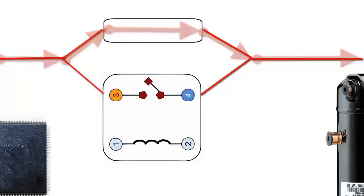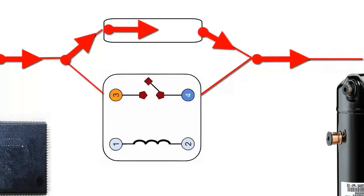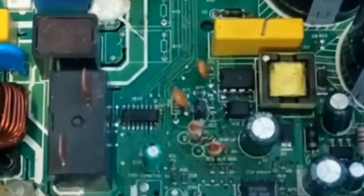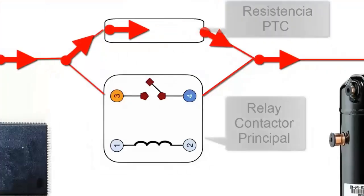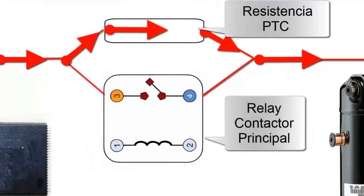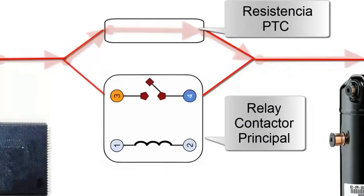On the screen, we have an animation that represents the operation of the PDC resistor and the main contactor of an electronic board located in the outdoor unit of an air conditioner. This system is designed to protect the entire electronic board from excessively high electrical currents.